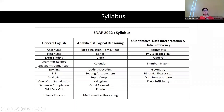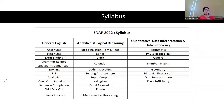Since we have prepared for CAT, we have practiced RC, DILR — data interpretation and logical reasoning — and Quant. Now what about the SNAP exam? If I talk about the SNAP exam pattern based on previous years, on the official website they mention Verbal Ability, Analytical and Logical Reasoning, and Quantitative Data Interpretation and Data Sufficiency.